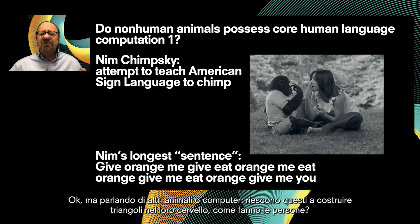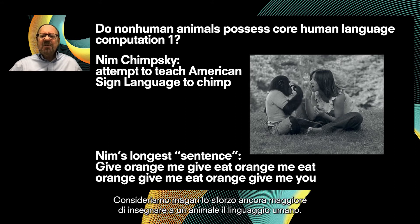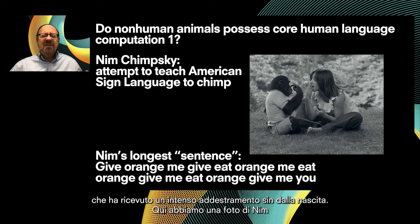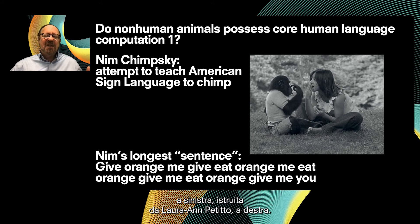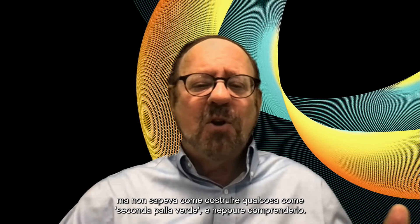But what about other animals or computers — can they build triangles in their brains like people do? Consider perhaps the most serious effort to teach a non-human animal a human language: American Sign Language, with the chimpanzee Nim, who received intensive training from birth. Here we have a picture of Nim being taught by Laura Petitto. After this training, Nim could string several signs together like a laundry list, but had no way to construct or understand something like 'second green ball.'